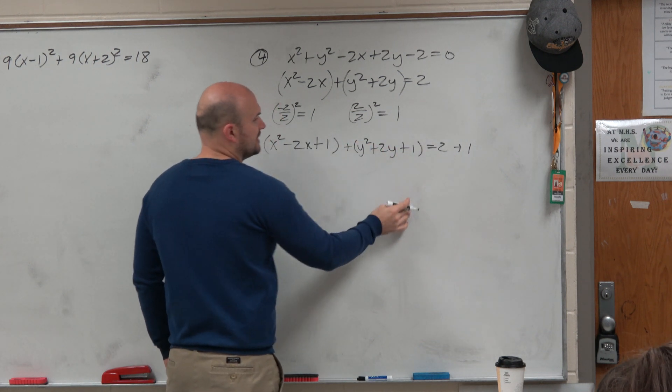And then here, I do 2y squared plus 2y plus 1. But again, I'm adding another one, so I have to add a 1 over here.